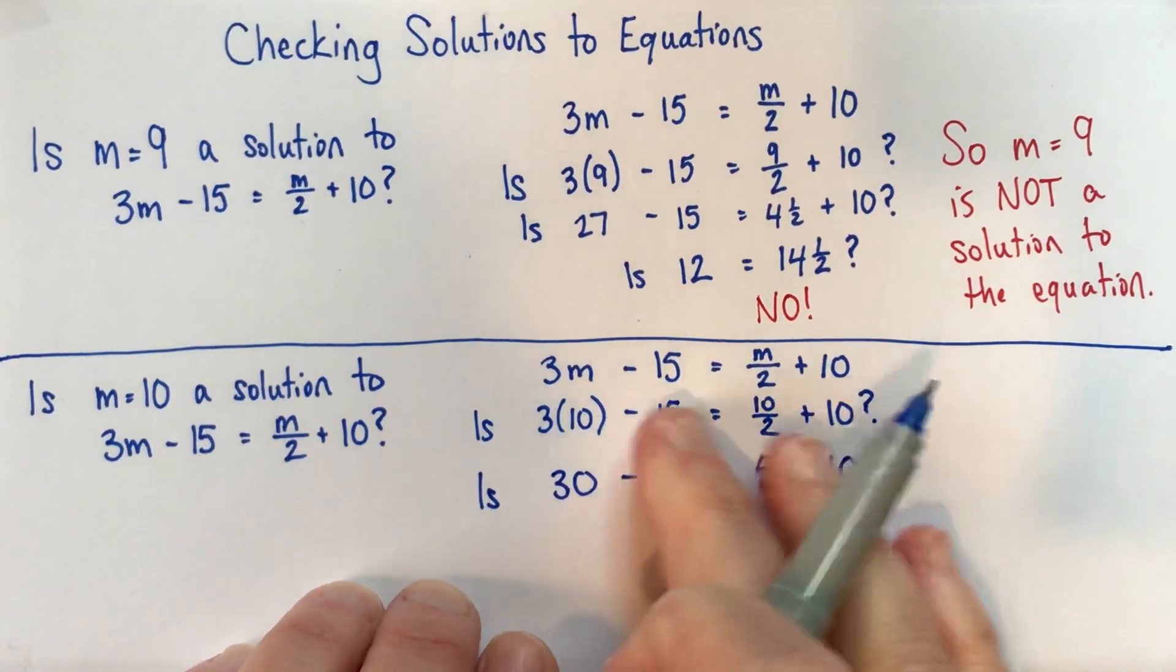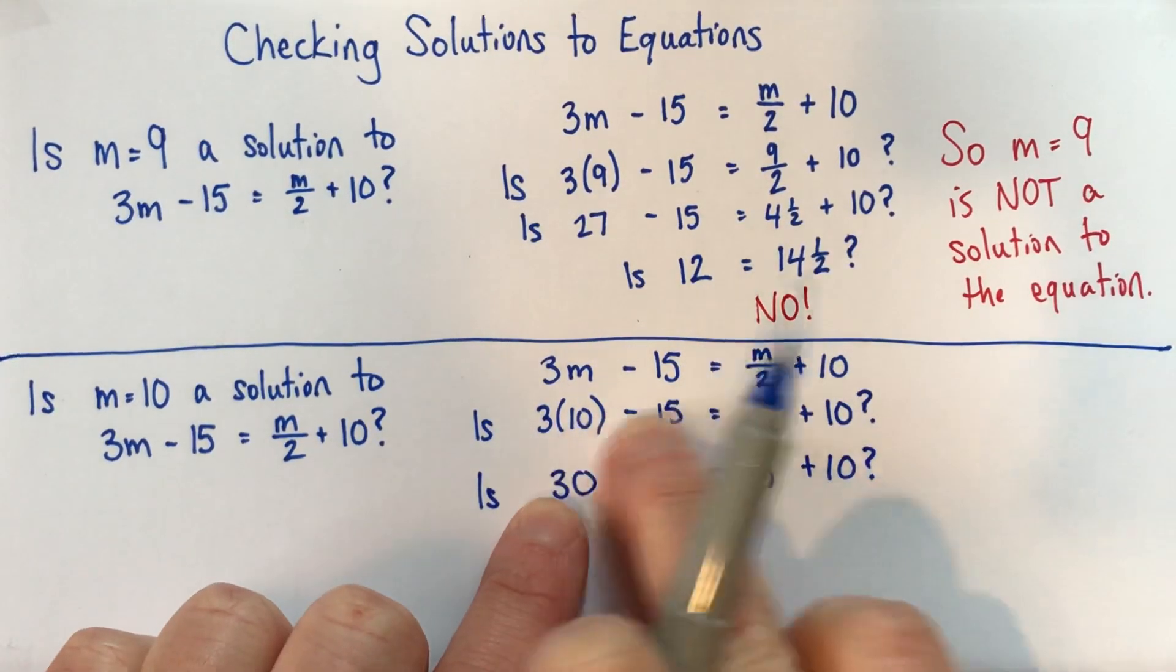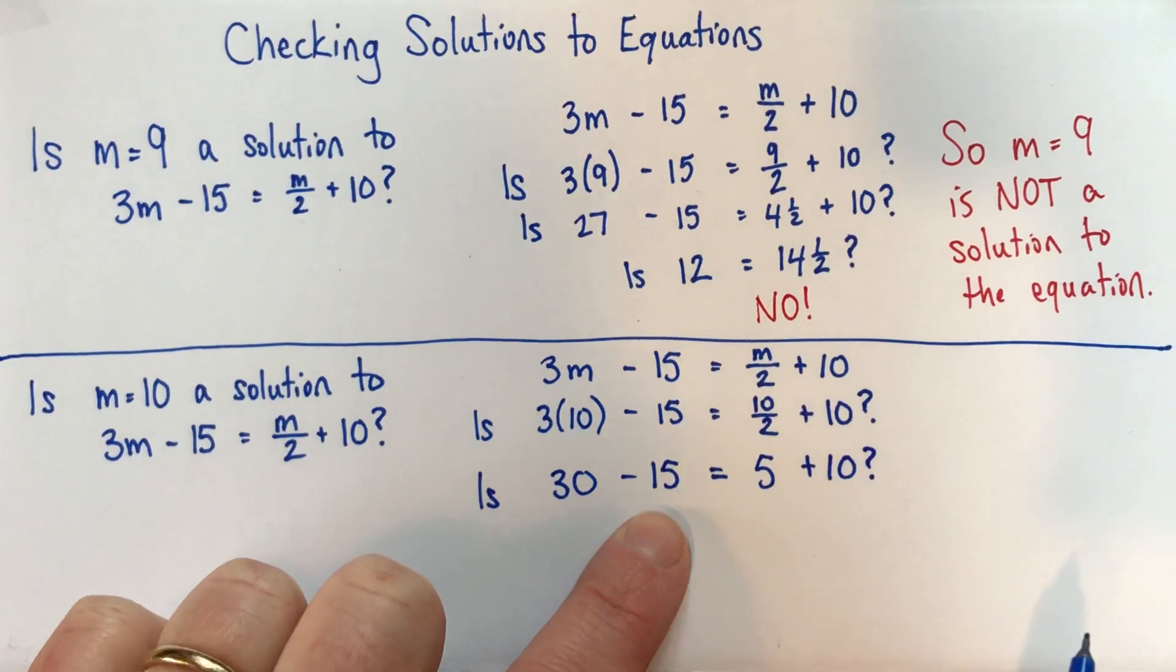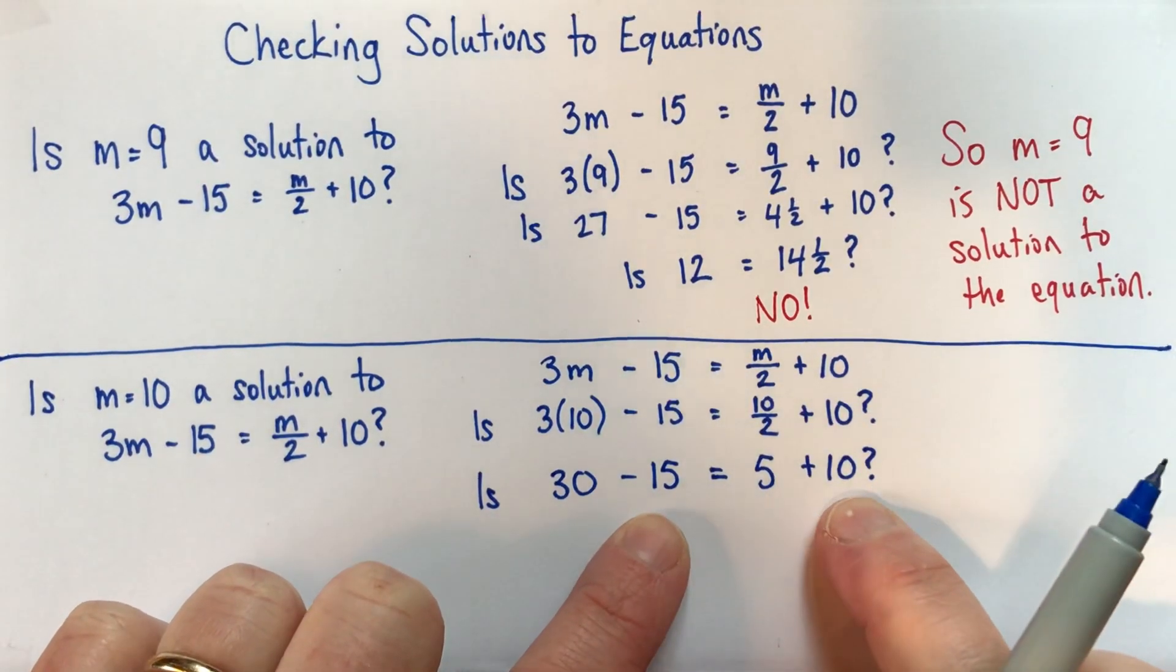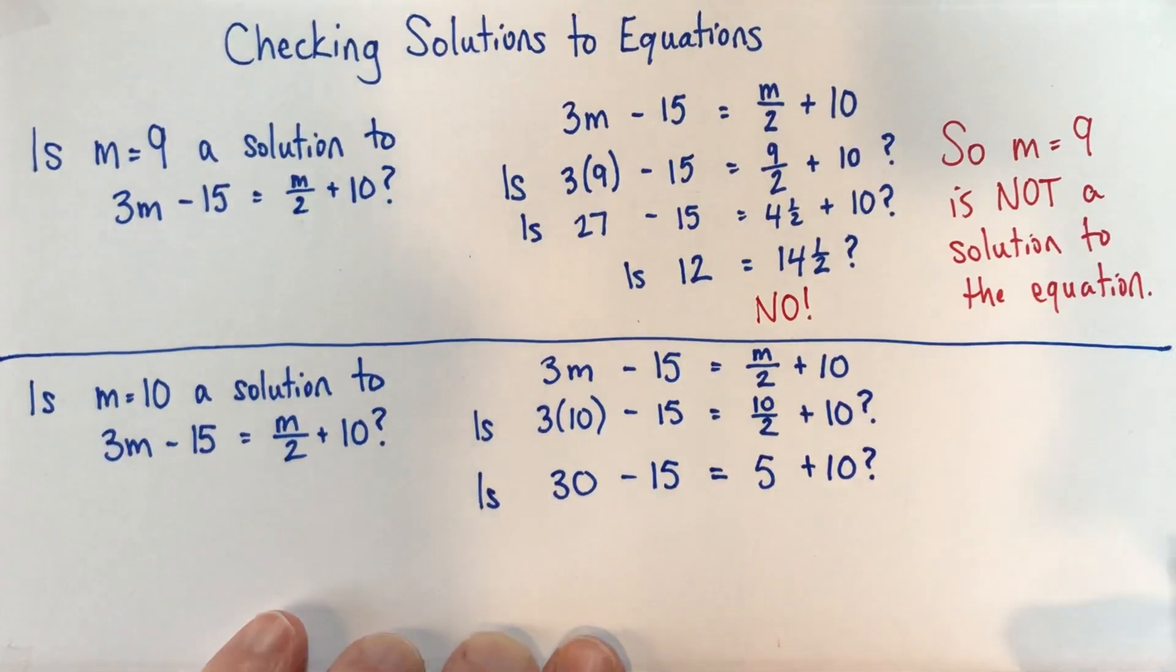So remember again, as you write it, it's not good enough to just write 30 here. We have to copy down this subtract 15. We have to copy down this plus 10 as we go.